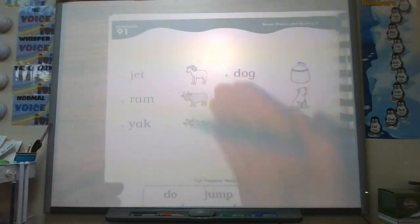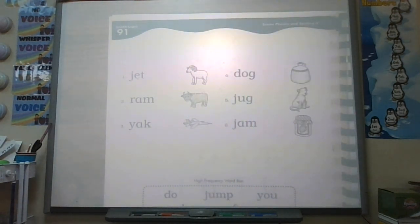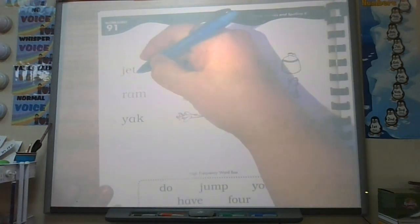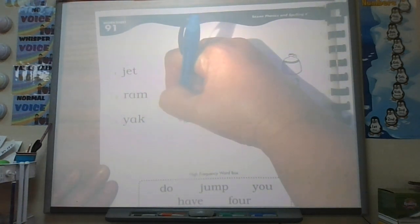Do you have a picture of a jet somewhere over here? Yes. Is it top, middle, or bottom? Bottom. It is on the bottom. So you draw your line from your word jet down to your picture of your jet.